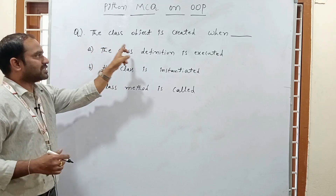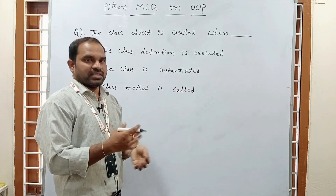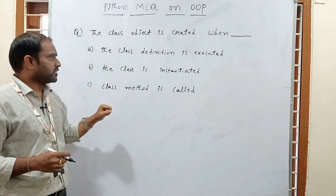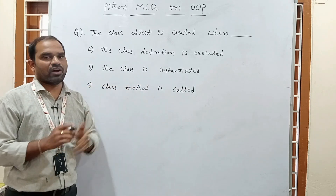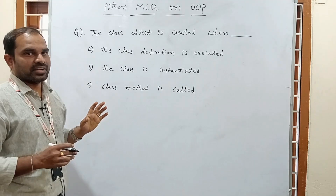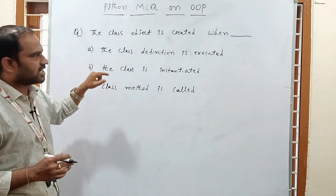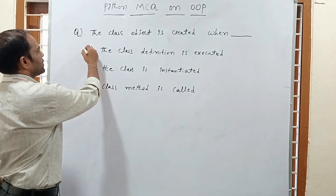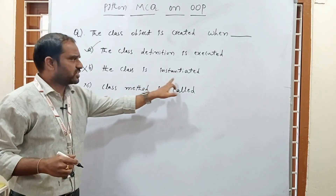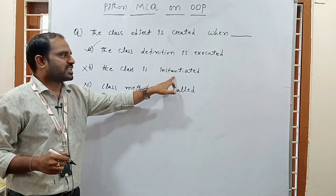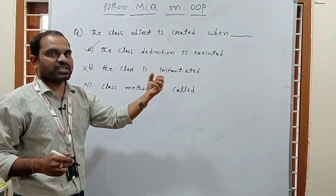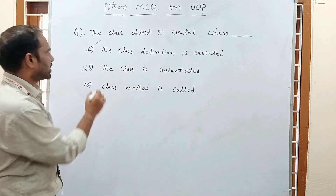The next question: when will an object under a class be created? Options are: A) the class definition is executed, B) the class is instantiated, C) a class method is called. Whenever we create an object it is called object instantiation. When you instantiate an object, the class definition is executed. So the correct answer is A — the class definition is executed when the object is instantiated.